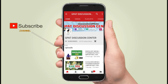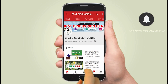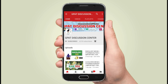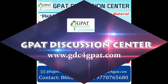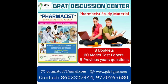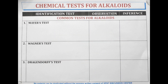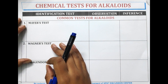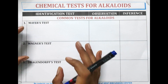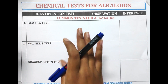Hello friends, subscribe to our channel GDC and press the bell icon for more updates. Hello Pharma Aspirants, welcome to GDC channel. In this video, we will be discussing about the chemical tests for alkaloids. The first test for the identification of alkaloids is Mayer's test.